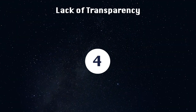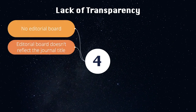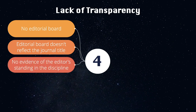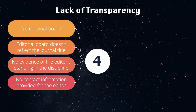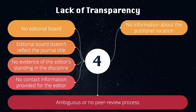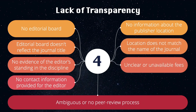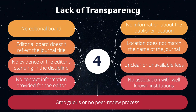The fourth red flag is a lack of transparency. This includes having no editorial board, or the editorial board doesn't reflect the journal title, no evidence of the editor's standing in the discipline, no contact information provided for the editor, ambiguous or no peer review process, no information about the publisher location, or the location does not match the name of the journal, unclear or unavailable fees, and the journal not being associated with any societies, universities, or institutions.